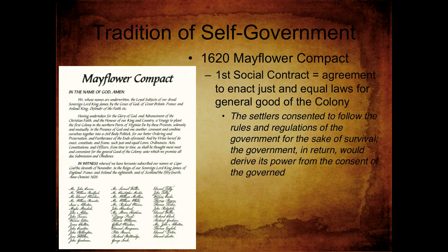The settlers consented to follow the rules and regulations of the government for the sake of survival. The government in return would derive its power from the consent of the governed — a workable relationship where the government provides the people with protection while the people provide the government with their service and obedience.